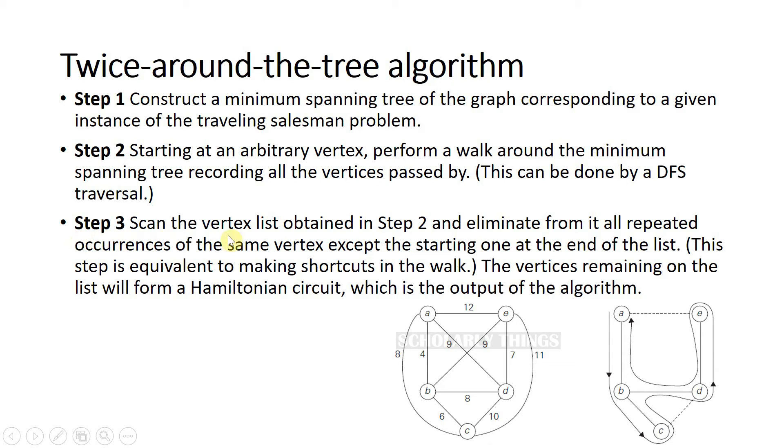Step three, scan the vertex list obtained in step two and eliminate from it all repeated occurrences of the same vertex, except the starting one at the end of the list. The vertices remaining on the list will form a Hamiltonian circuit, which is the output. If you consider this example, a twice around the tree walk that starts and ends at A will be...